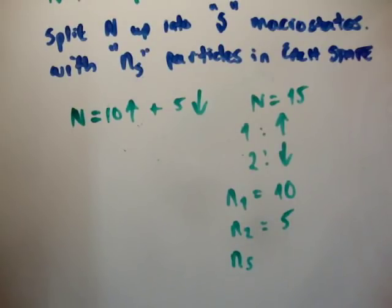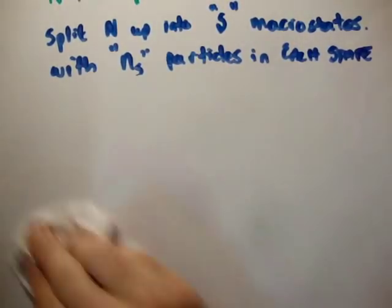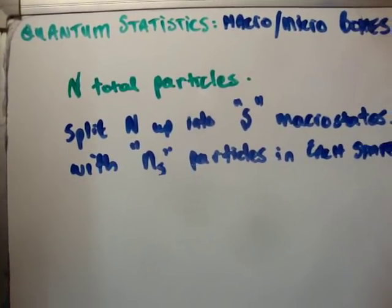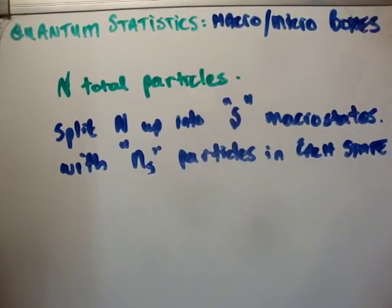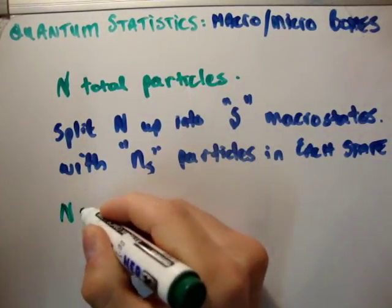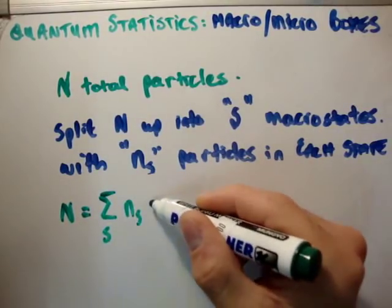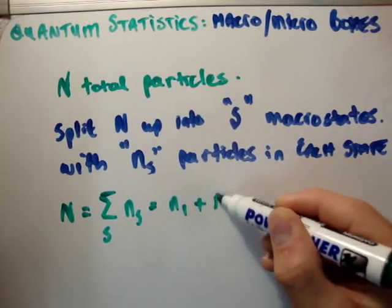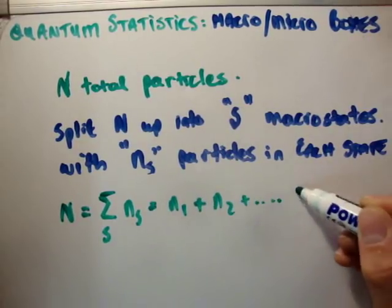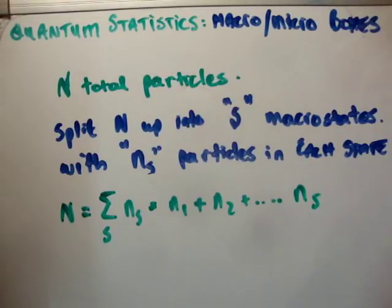You should get used to the placeholder s — we'll be using it all the time. Mathematically, capital N is the sum over s of n_s, equal to n_1 plus n_2, all the way up to n_s. That's pretty straightforward.